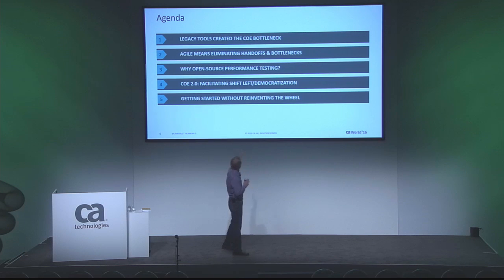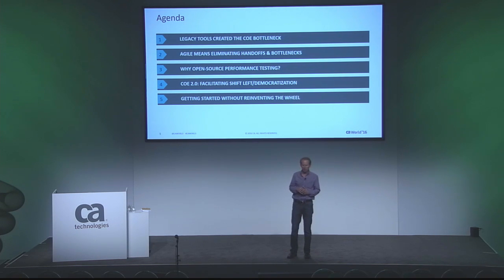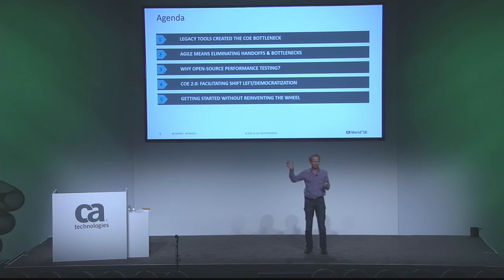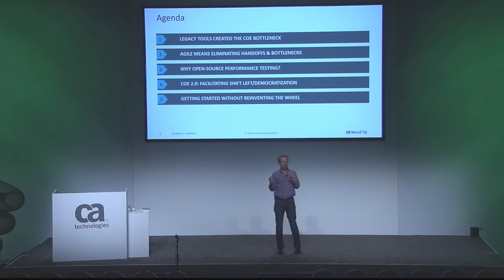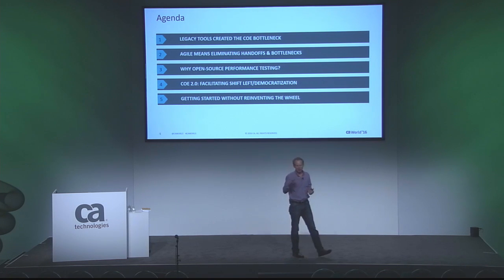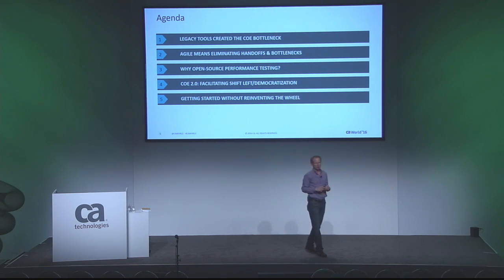Here's the agenda. My first point is that legacy tools really created the Center of Excellence bottleneck. The Center of Excellence is a place with talented people and big investments, but by its definition and how the tools were structured, it led to a natural bottleneck. One of the key issues with agile and DevOps is that your goal is to eliminate handoffs and bottlenecks.